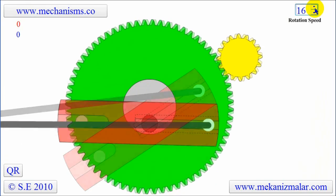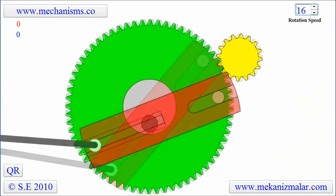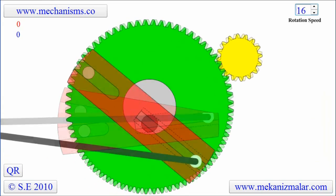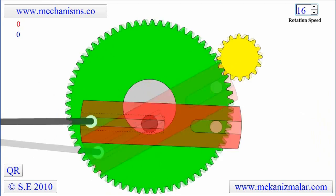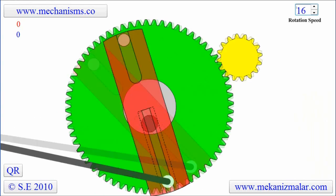And this is how a Whitworth quick return mechanism works. We will show the practical application of this in the traversing head shaper animation to come.